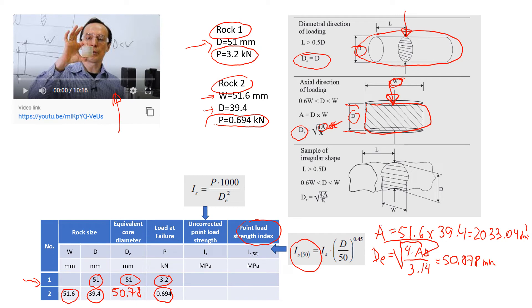Then we're going to estimate what we call uncorrected point load strength. This is the formula: P comes from the test. We multiply by thousand because our measurements are in millimeters, and this is the diameter—equivalent diameter—in the power of two. I already did the calculations. Probably the easiest way is to prepare an Excel spreadsheet with these numbers and formulas.